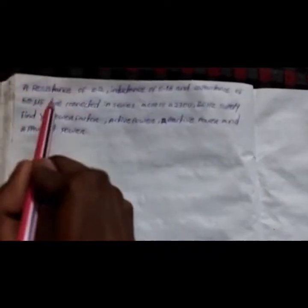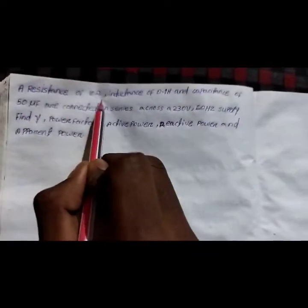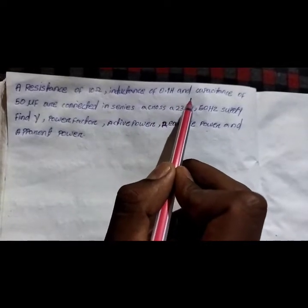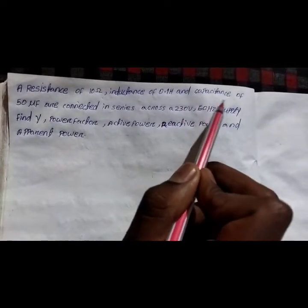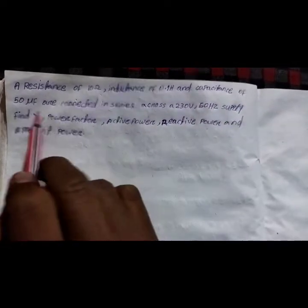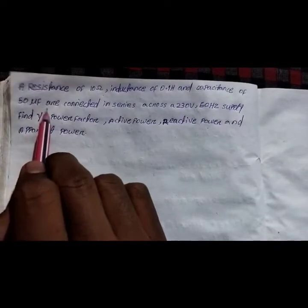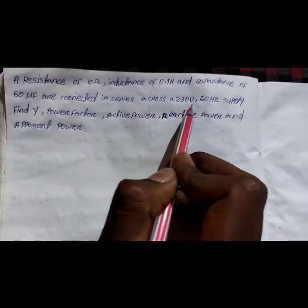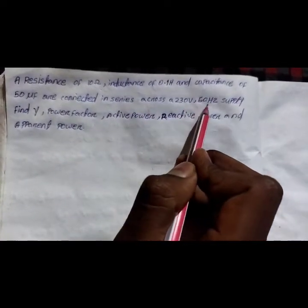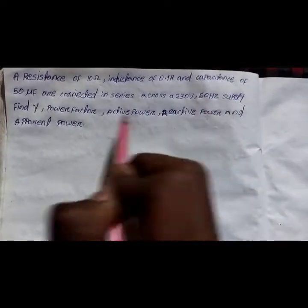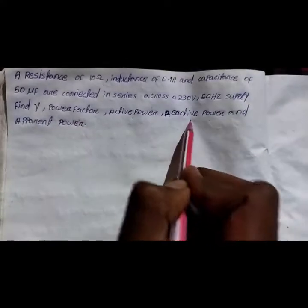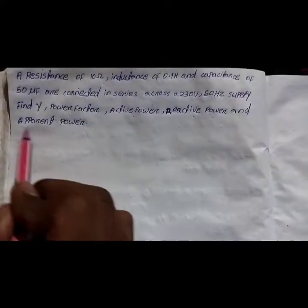The question is: a resistance of 10 ohm, inductance of 0.01 henry, and capacitance of 50 micro faraday are connected in series across a 230 volt, 50 Hz supply. Find the admittance Y, power factor, active power, reactive power, and apparent power.